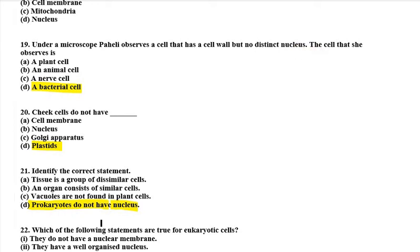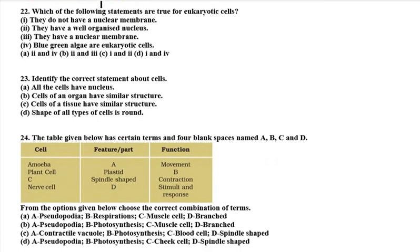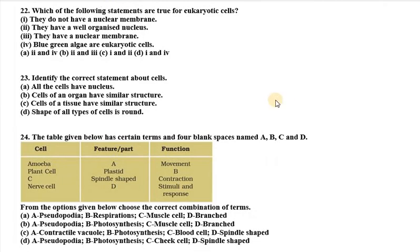Twenty-second question: which of the following statements are true for eukaryotic cells? They do not have a nuclear membrane; they have a well-organized nucleus; they have a nuclear membrane; blue-green algae are eukaryotic cells. Both the second and third statements are correct — eukaryotic cells have a well-organized nucleus and they do have a nuclear membrane. So the answer is option covering both second and third.